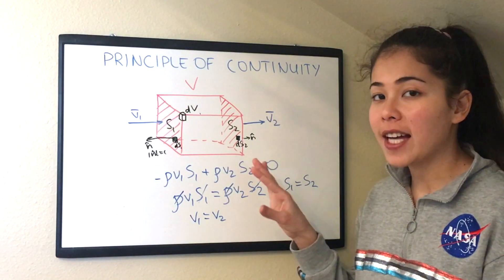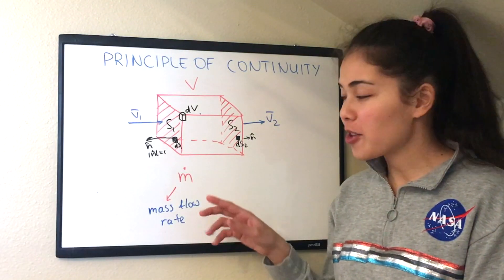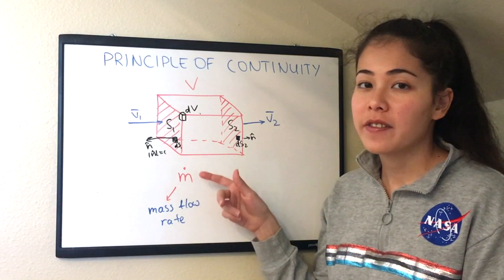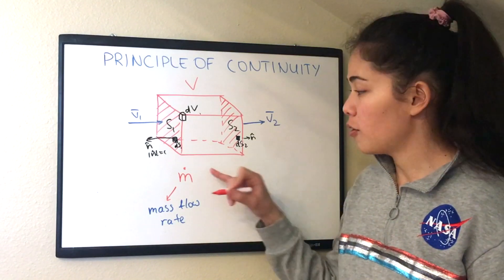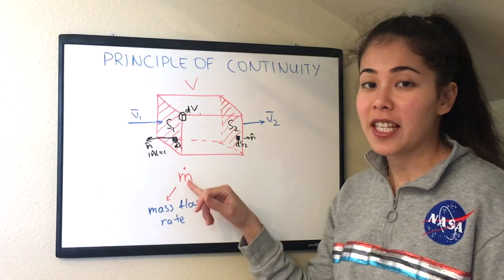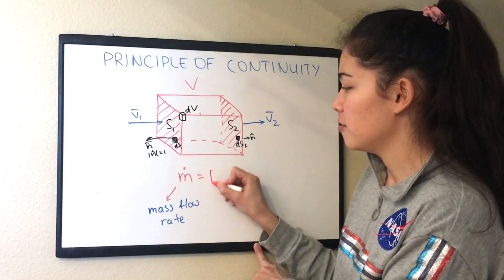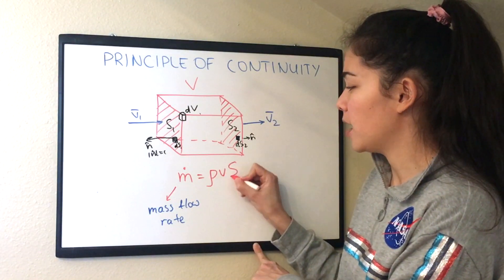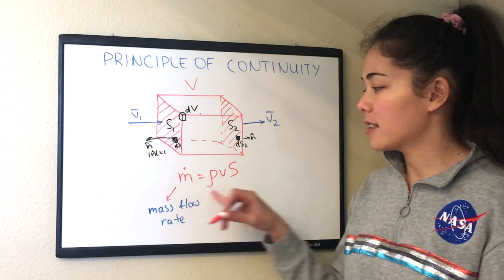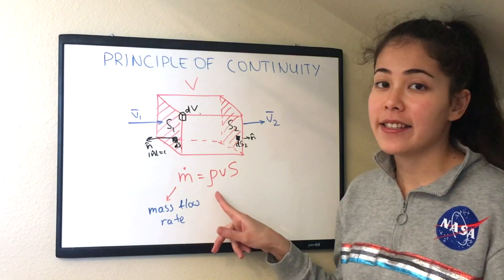Now let's define another new term which is called a mass flow rate. Mass flow rate is denoted by m dot where dot means the derivative with respect to time. So this is essentially d dt of m. And in other terms, this mass flow rate is equal to density multiplied by velocity multiplied by the control surface area. And this is true for any control volume, any control surface, and any density.